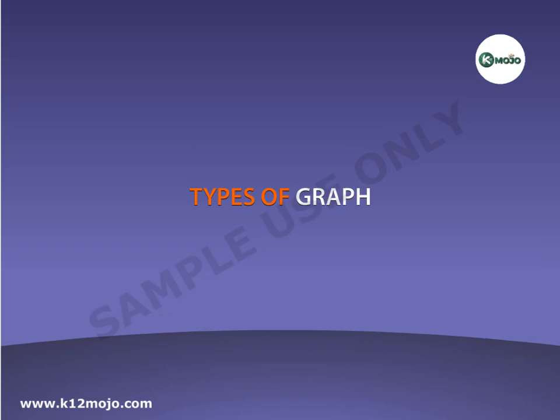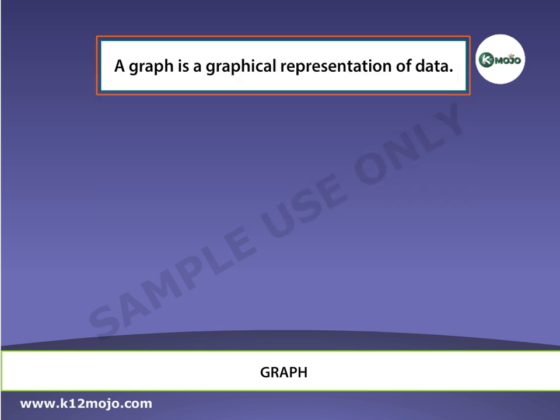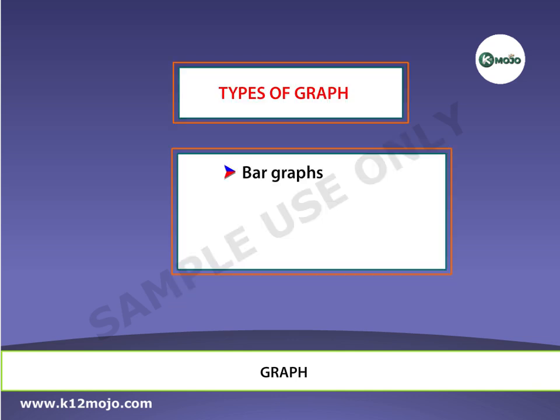Types of Graph. We know that a graph is a graphical representation of data. Here we will understand the different types of graphs. The four types of graphs are bar graph, histograms, pictographs, and pie charts.